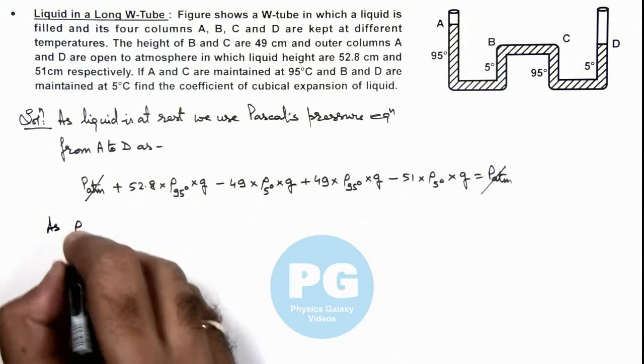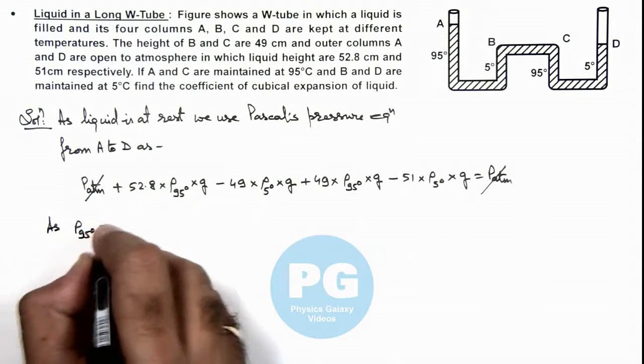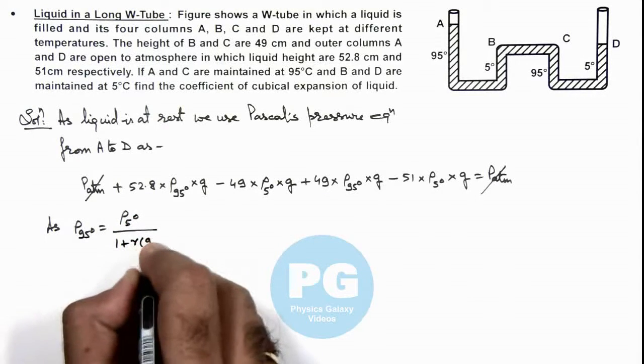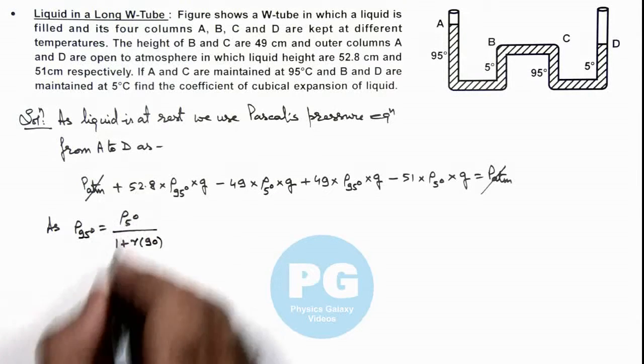And we can use as ρ at 95 degree can be written as ρ at 5 degree divided by 1 plus γ multiplied by 90. That relation we use.